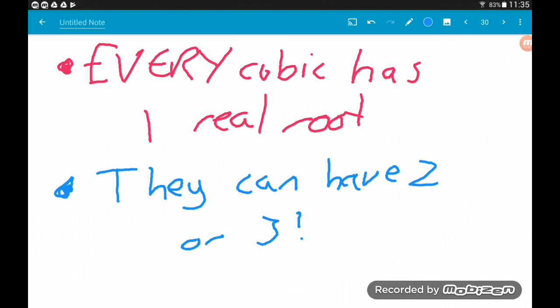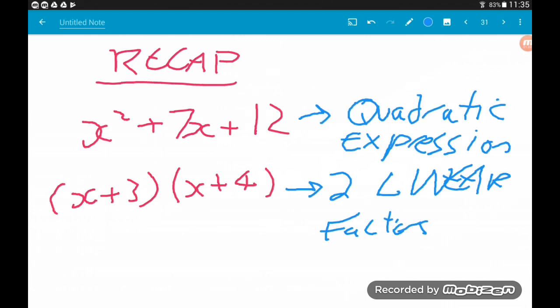So a little bit of a recap - let's make sure we really know what factors are. With a quadratic, say we got this example here: x² + 7x + 12. This is called a quadratic expression. Then we can factorize this to (x + 3)(x + 4). Each of these brackets is a linear factor.